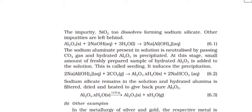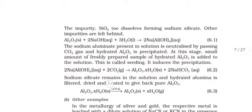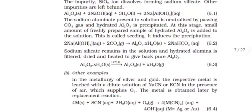This impurity, SiO2 also dissolves forming sodium silicate. Other impurities are left behind. Al2O3 solid plus 2 NaOH aqueous plus 3 H2O liquid gives 2 NaAlO2 aqueous. The sodium aluminate present in solution is neutralized by passing carbon dioxide gas and hydrated Al2O3 is precipitated. At this stage, small amount of freshly prepared sample of hydrated Al2O3 is added to the solution. This is called seeding. It induces the precipitation. Sodium silicate remains in the solution and hydrated alumina is filtered, dried, and heated to give back pure aluminum oxide.